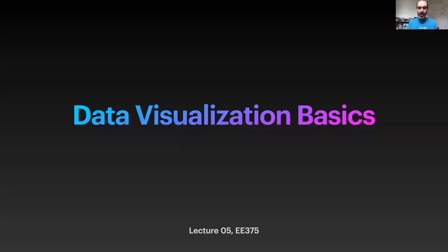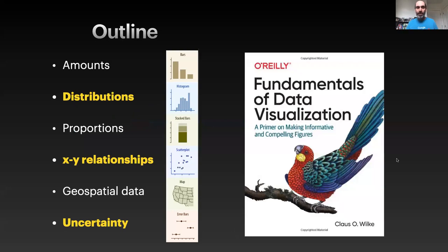Hey, and welcome to lecture group 5 on data visualization. This set of lectures is going to follow closely the middle section of Klaus Wilkie's book The Fundamentals of Data Visualization. That book talks broadly about visualizations for amounts, distributions, proportions, XY relationships, geospatial data, and uncertainty. In this lecture I'm going to focus specifically on distributions, uncertainty, and XY relationships.